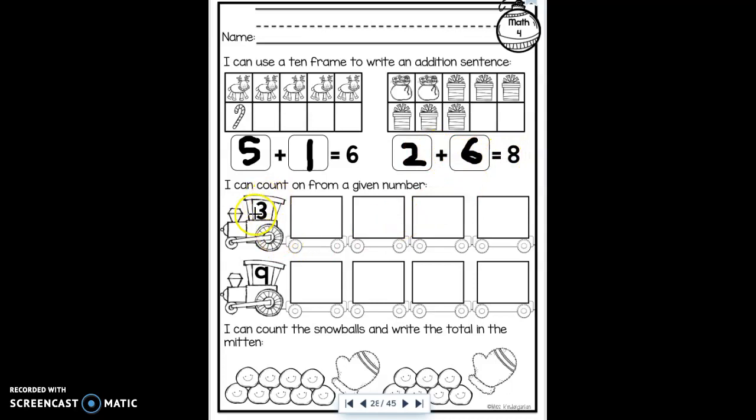In the middle, I'm counting on. So they give me a number in the engine and I count on. The number I have is three. After three comes four, then five, six, and seven. The next train starts with nine. After nine, I have 10, 11, 12, and 13. Remember with these two digit numbers, I always start at the left and go to the right. So because I'm in the teens, the one comes first and then the next number. So 10, 11, 12, 13.